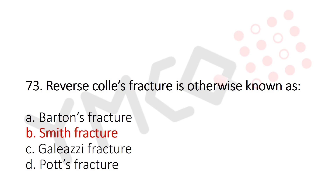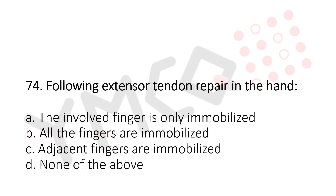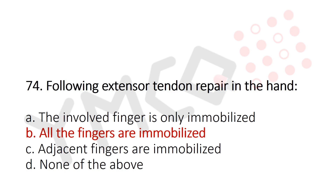Question 74: Following extensor tendon repair in the hand — Option A: only the involved finger is immobilized, Option B: all the fingers are immobilized, Option C: adjacent fingers are immobilized, Option D: none of the above. The answer is Option B, all the fingers are immobilized.